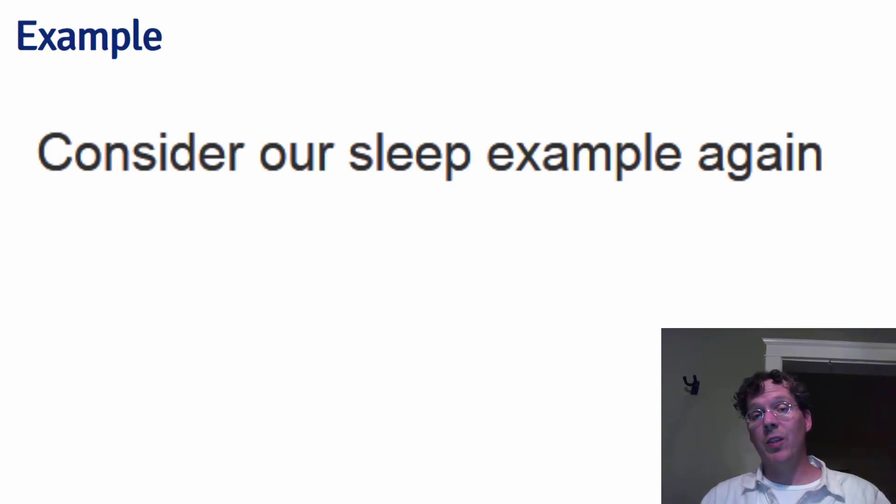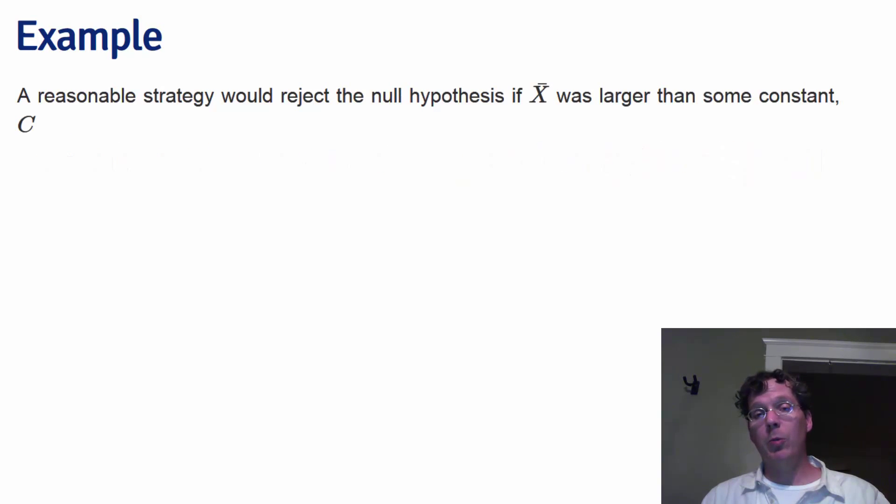Consider our respiratory disturbance index example again. A reasonable strategy would be to reject the null hypothesis if our sample mean respiratory disturbance index was larger than some constant. Let's label that constant c. C will take into account the variability of x bar.